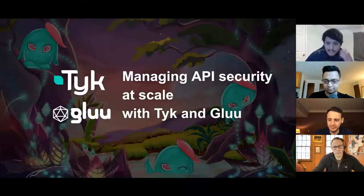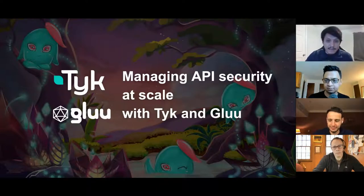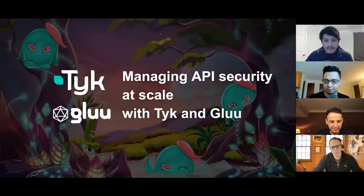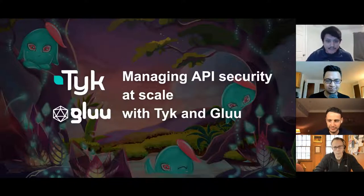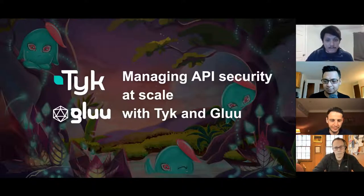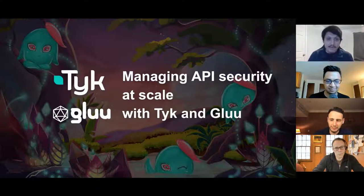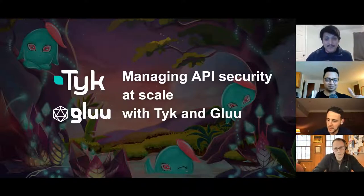If you look in the handout section, you'll see links to access an introductory guide to modern API security management, as well as a how-to-secure APIs according to Glue guide. We do have a few polling questions during today's event, so we'd appreciate it if you could take a couple of seconds to submit your answers. Finally, stick around until the end because we are doing a drawing for four $25 Amazon gift cards, so stay tuned to see if you're a winner.